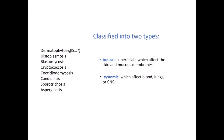A dermatophytosis is ringworm. We also have histoplasmosis, blastomycosis, cryptococcosis, coccidiomycosis, candidiasis, sporotrichosis, and aspergillosis. You should have a basic understanding of where and when we see some of these and what they look like when we see them in animals.